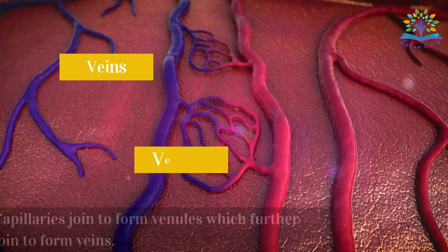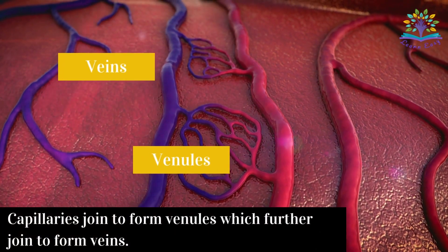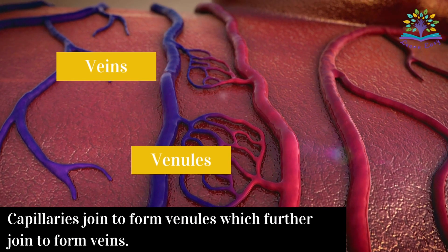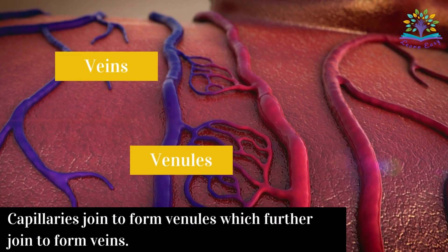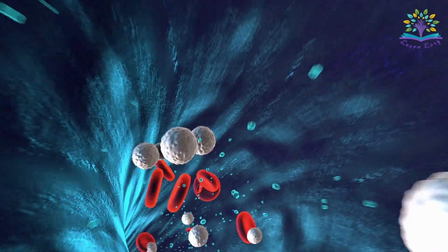Coming back to capillaries, they join to form venules, which further join to form the vein. The blood which was not diffused to the tissue will flow through these veins.